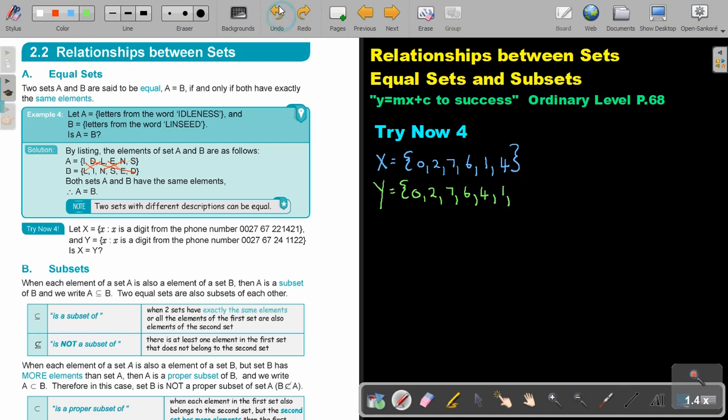So let's just, that last comma must not be there. So if I look at this, it's 0, 2, 7, 6, 1, and 4, exactly the same. Therefore, set X is equal to set Y. Let's look at the next one.